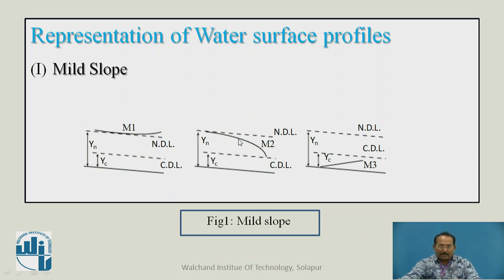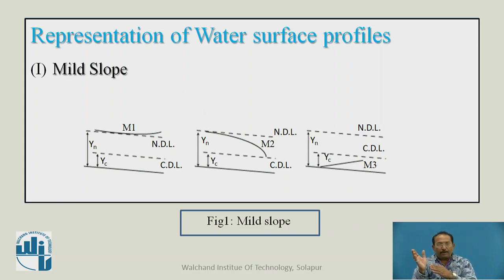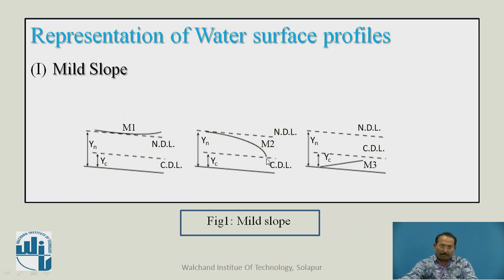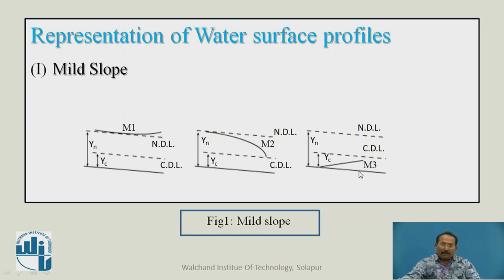When water flows in the longitudinal direction and the depth reduces, Y enters zone 2. Here, Yn > Y > Yc, giving an M2 type profile. When Y falls further into zone 3, Yn > Yc > Y, giving an M3 type profile.